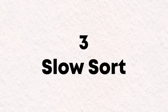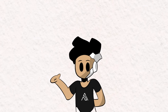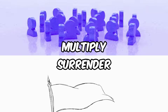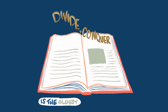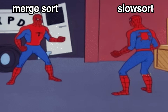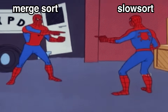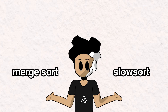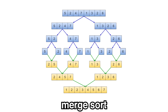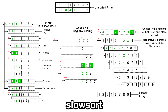Number 3, Slowsort. Slowsort is a recursive sorting algorithm that is based on a paradigm called multiply and surrender, which is a parody of the divide and conquer paradigm. Slowsort is very similar to the merge sort algorithm in the sense that they both break down the sorting problem into smaller subproblems. However, unlike merge sort, which efficiently combines and sorts the sublists, Slowsort multiplies the problem and tries to delay the sorting process as much as it can.